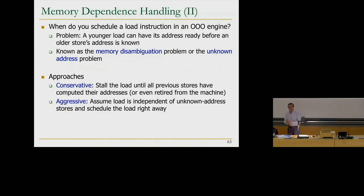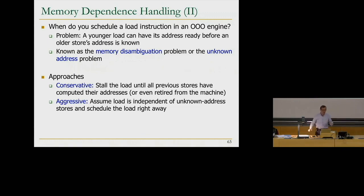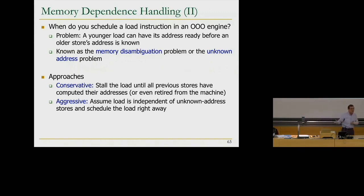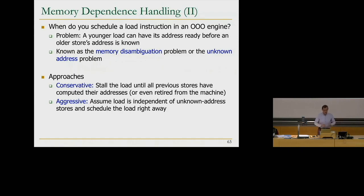The aggressive approach takes exactly the opposite stance. A load says: I know my address, I'm going to assume that I'm independent of any previous stores, and I'll schedule this load right away. The prediction is that hopefully the load won't depend on any of the stores. Of course, if you do this, you need to check later whether you predicted correctly. This is an example of prediction in a machine. It doesn't work extremely well, although it's usually better than the conservative approach, but it adds additional machinery to check. If you're wrong, you re-execute the load and get the correct value — basically, you flush the pipeline.